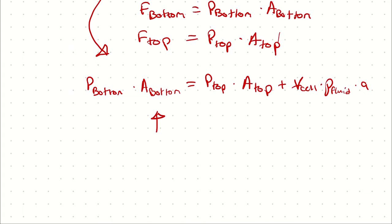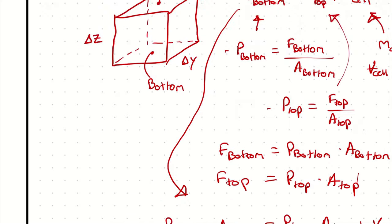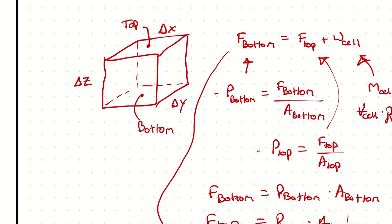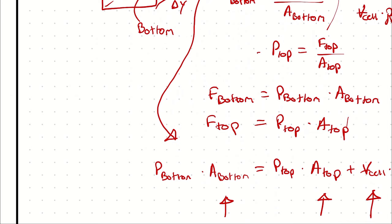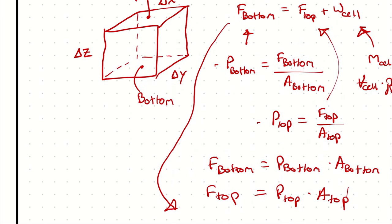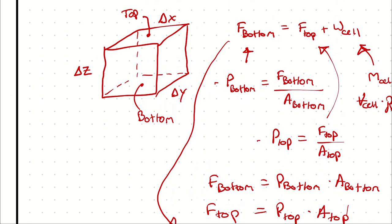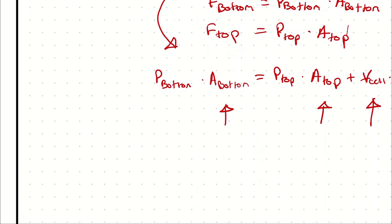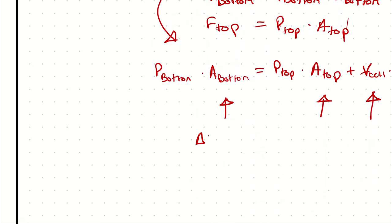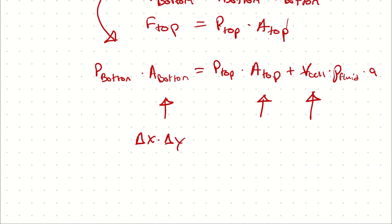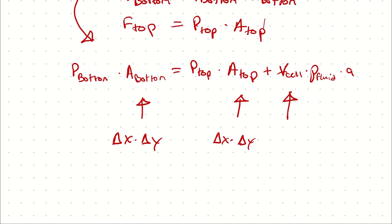The area of the bottom, area of the top, and volume of the cell can all be described in terms of the cell dimensions I've defined. Delta X and Delta Y are the two dimensions that make up the top and bottom. Therefore, the area of the bottom is Delta X times Delta Y, the area of the top is Delta X times Delta Y, and the volume is Delta X times Delta Y times Delta Z.